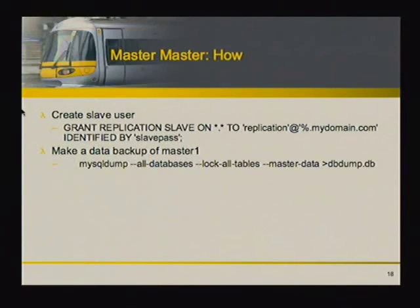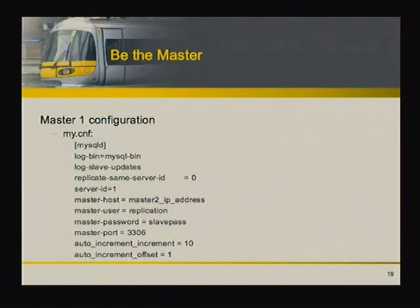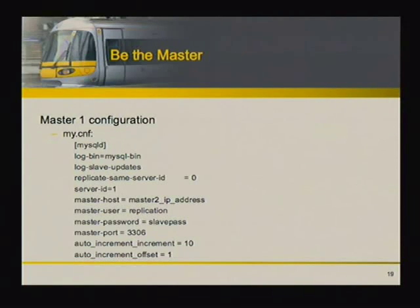How do we do master-master? We set up a master and a slave, and then we go back and tell that master: 'you're the slave of your slave.' That makes a two-server loop. We create a replication user just like before and dump out all data with --master-data. Master one's configuration is very similar to before: we add log_bin, we add log_slave_updates — meaning that if server one tells server two to make an update, server two will log that to its own bin file so server three in the chain can hear about it too. Without log_slave_updates, updates from other masters won't propagate.